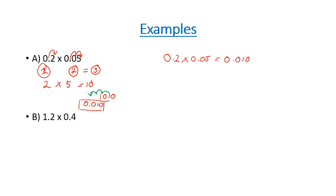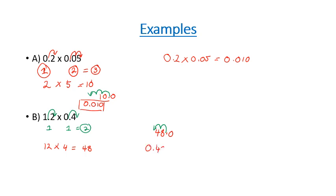In our second example we've got 1.2 times 0.4. If we move our decimal place one spot and one spot, we've moved it a total of two spots, and our whole numbers become 12 times 4. We know 12 times 4 is 48. With 48.0 as our decimal, we move the decimal spot back two spots because we moved it two spots to the right originally. That gives us an answer of 0.48.